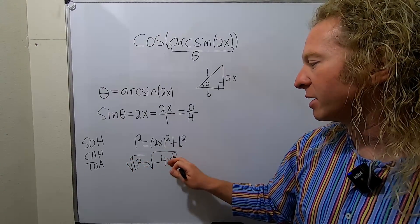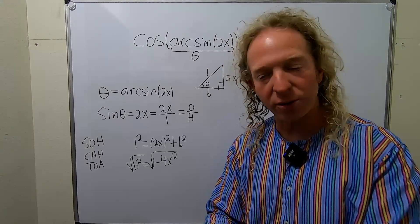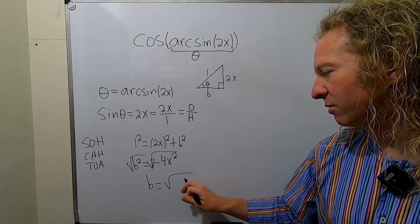Take the square root. You do get a plus or minus, but you only take the plus because this is the length of the side of a triangle. So it can't be negative. So b is equal to this.